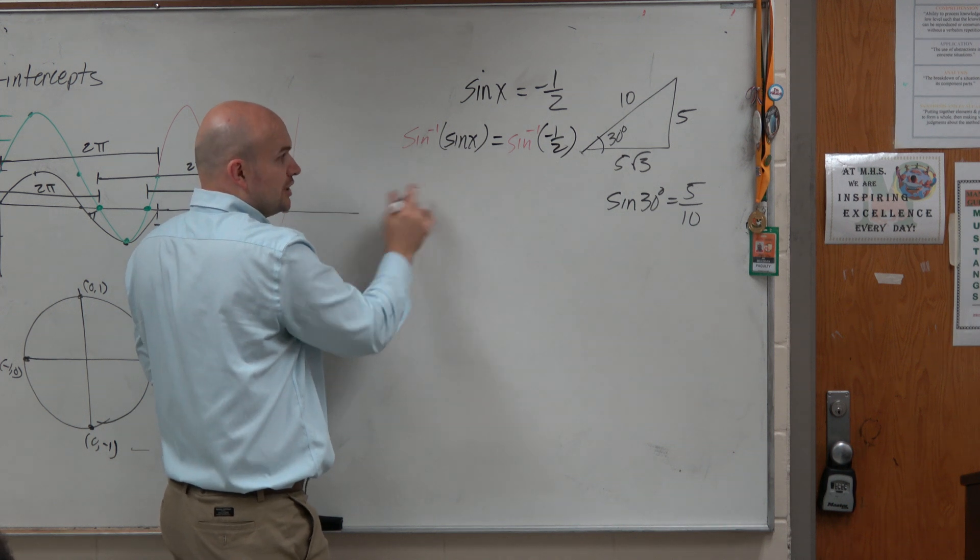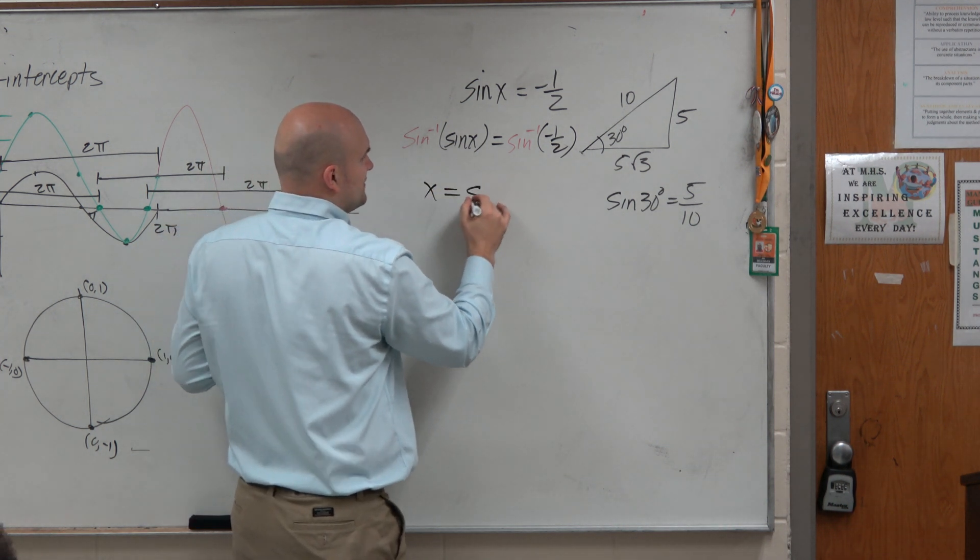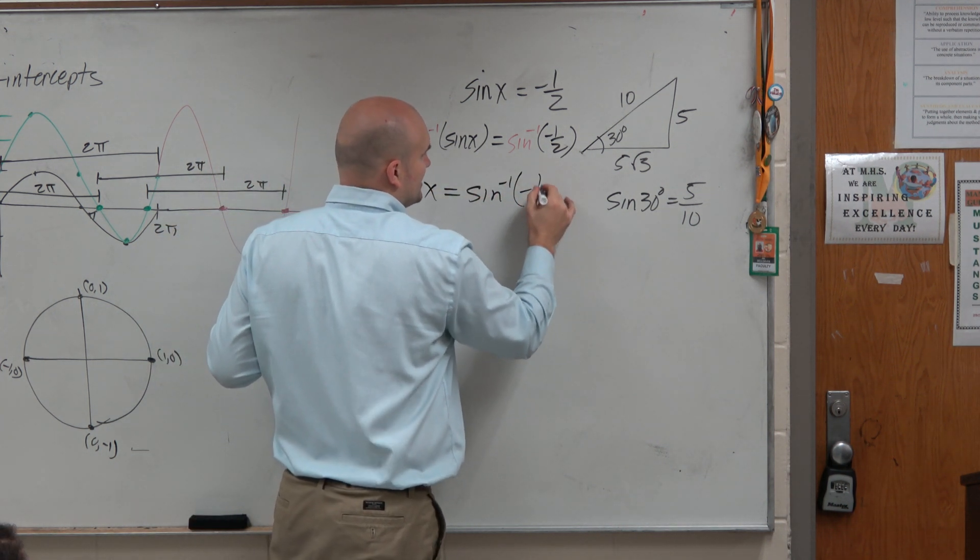Obviously, sine inverse and sine are going to undo each other, and we're left with sine inverse of negative 1/2.